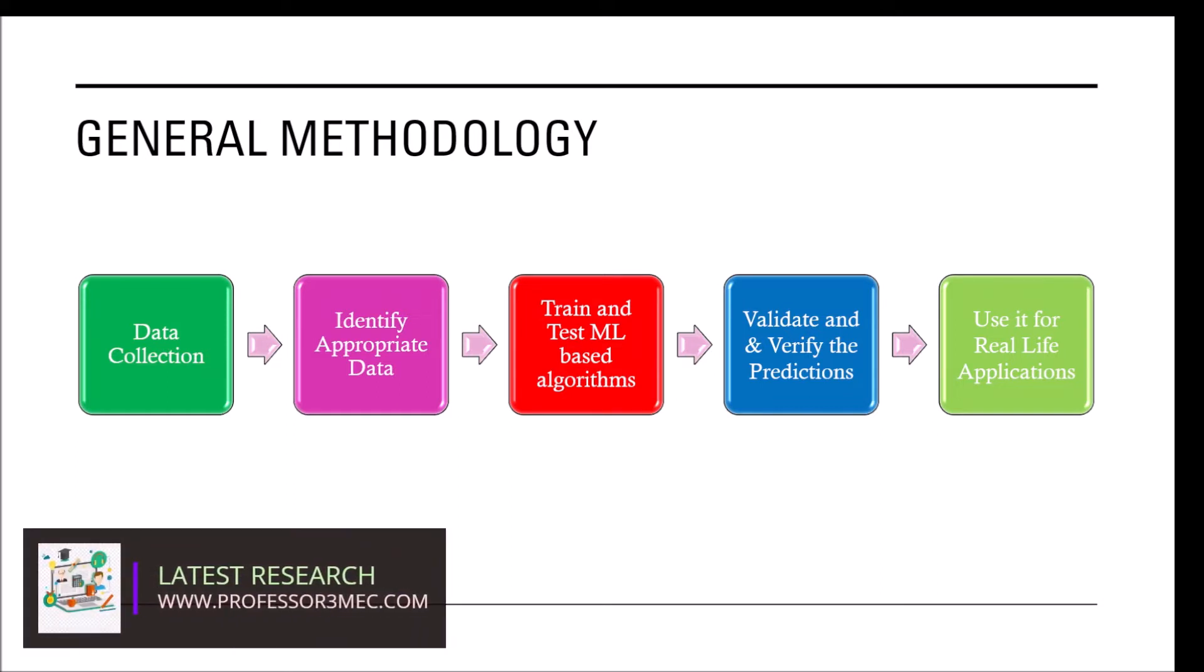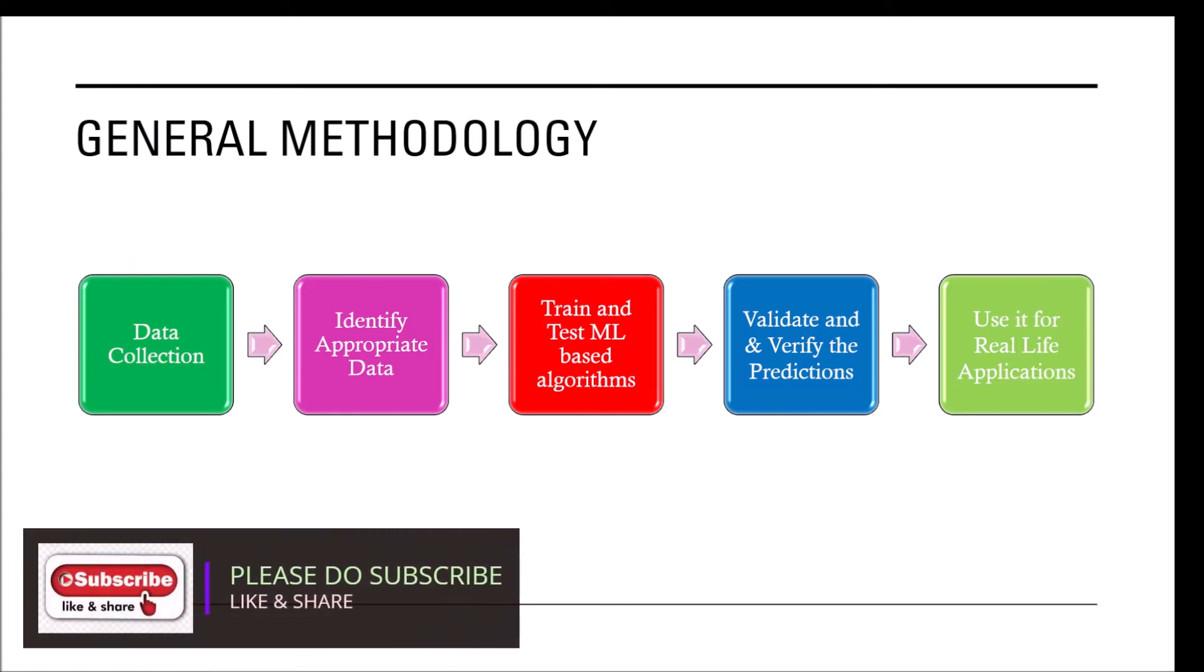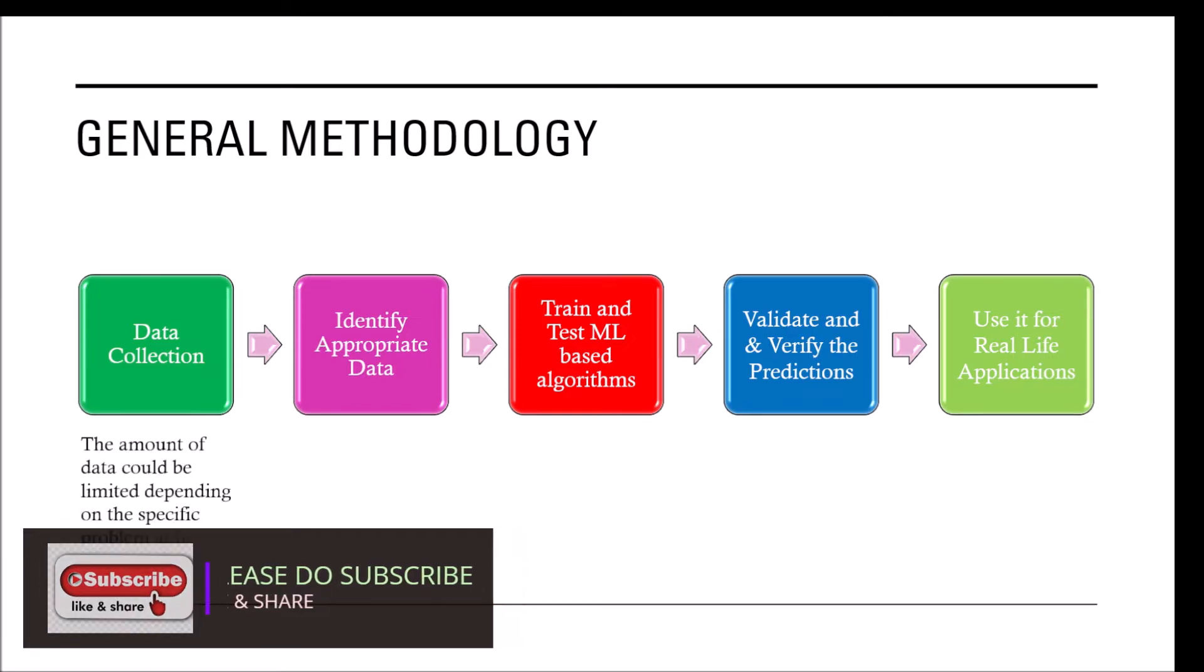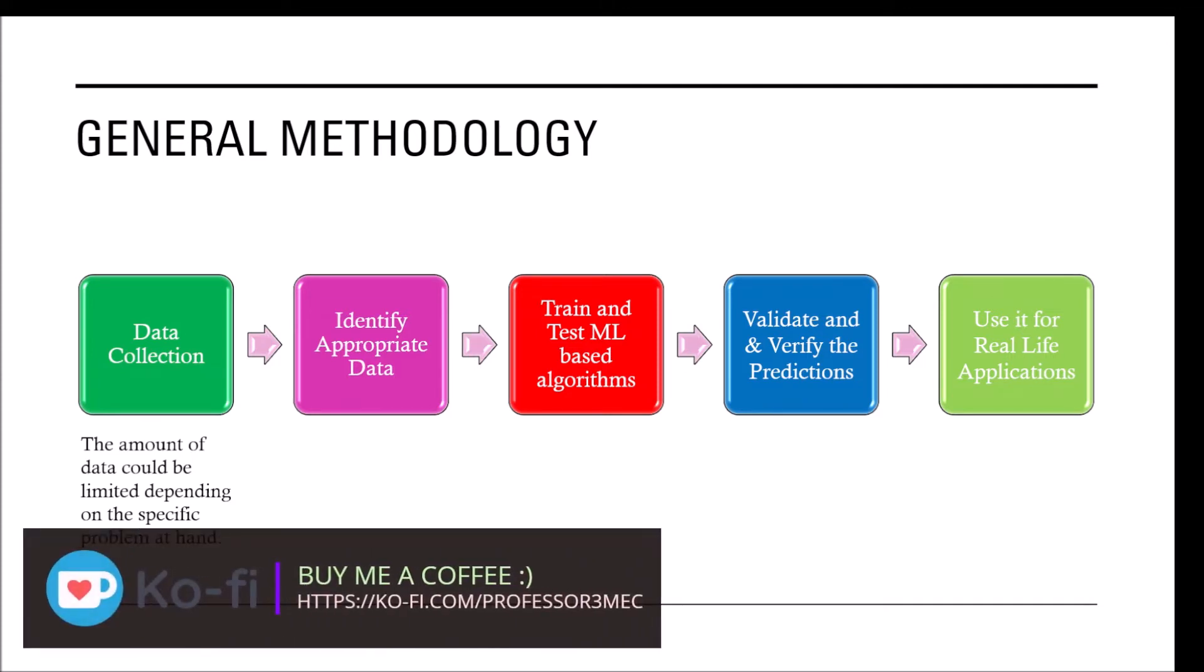But real life is not that easy where you can just go in a straight line as you can see here. There are many ups and downs. So one problem you come across is the amount of data which could be limited depending on the specific problem at hand. So you need to really carefully look at the data, how much data is available, especially for that specific problem.